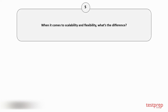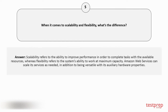Question number 5: When it comes to scalability and flexibility, what's the difference? Scalability refers to the ability to improve performance in order to complete tasks with the available resources, whereas flexibility refers to the system's ability to work at maximum capacity. Amazon Web Services can scale its services as needed, in addition to being versatile with its auxiliary hardware properties.